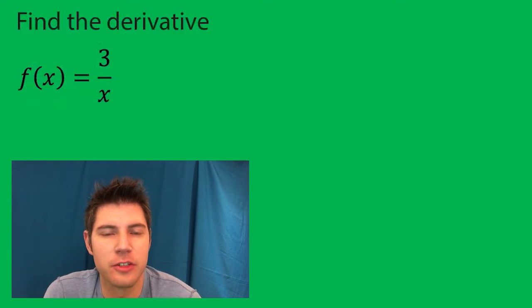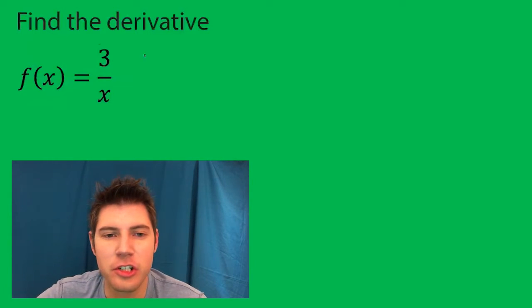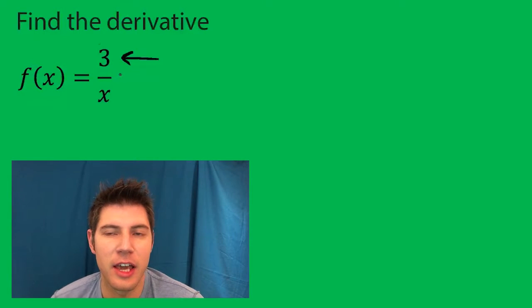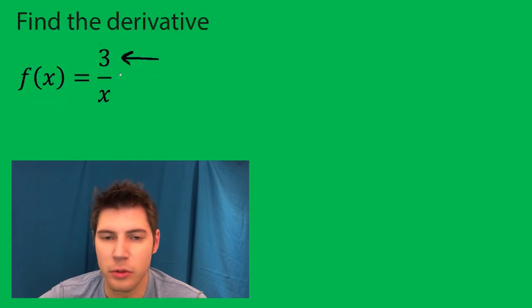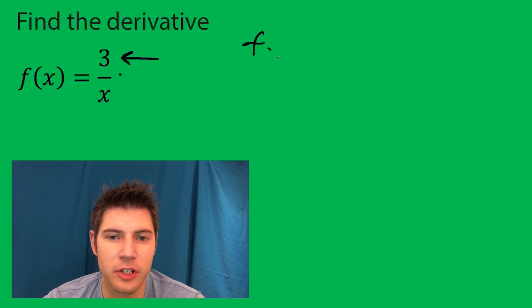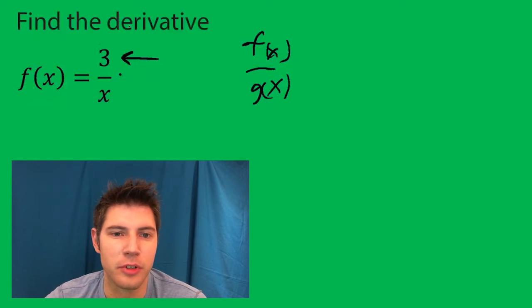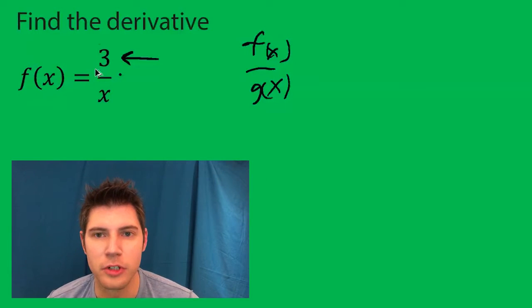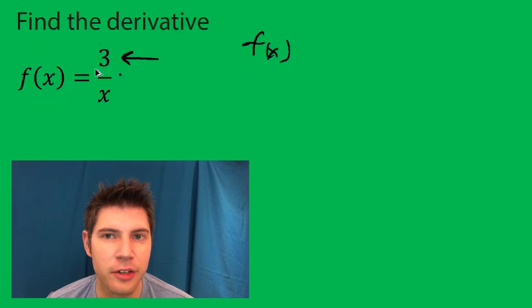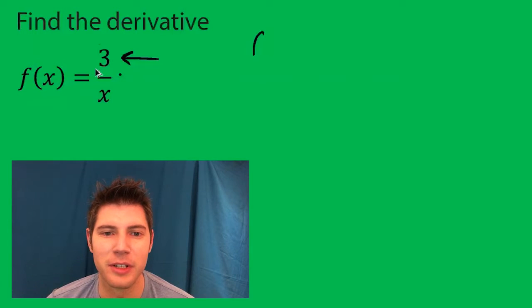So your first thought might be, hey, let's use quotient rule. But you actually don't want to use quotient rule, because this is just a constant. So quotient rule is when you have some function over another function. That is not occurring here, it's just a simple constant. So you don't need to overcomplicate it. You can use quotient rule, but I would not recommend it.